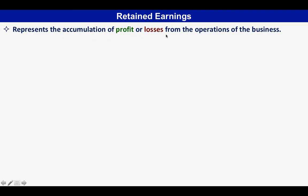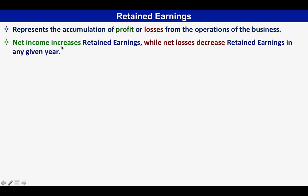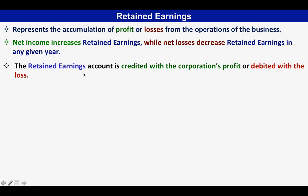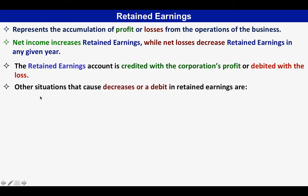Retained earnings represents the accumulation of profit or losses from the operations of the business. This is the account we use when recording profit or losses. Net income increases retained earnings while net losses decrease retained earnings in any given year. The retained earnings account is credited with the corporation's profit or debited with a loss. There are other situations that decrease or debit retained earnings aside from losses.